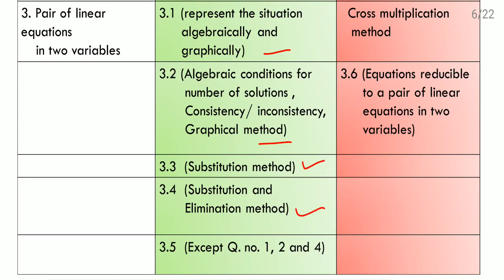In exercise 3.5, except questions 1, 2, and 4, we need to leave those questions. We can use any other method to solve the sums in exercise 3.5. All five exercises are there and we need to do them. But exercise 3.6, about equations reducible to a pair of linear equations in two variables, is deleted. And importantly, the cross multiplication method is also deleted.